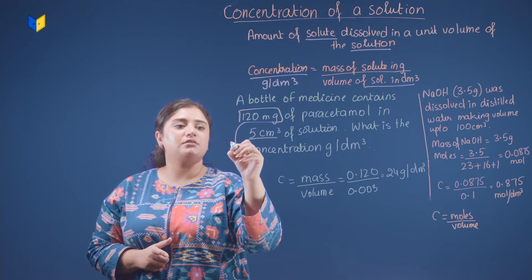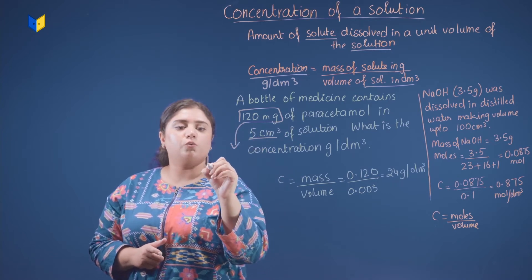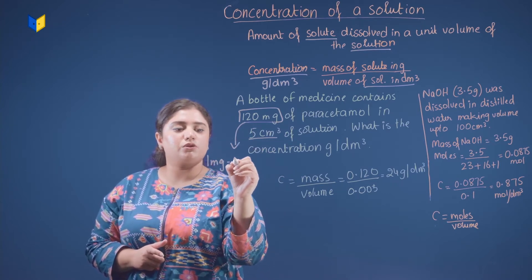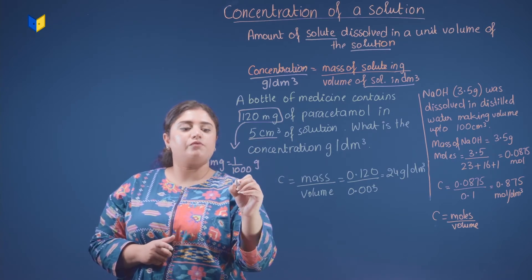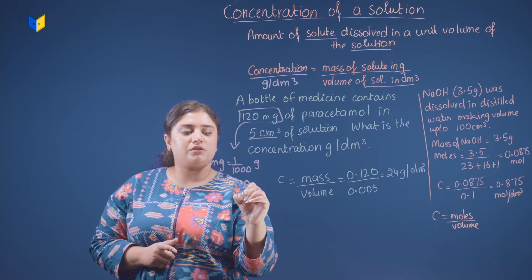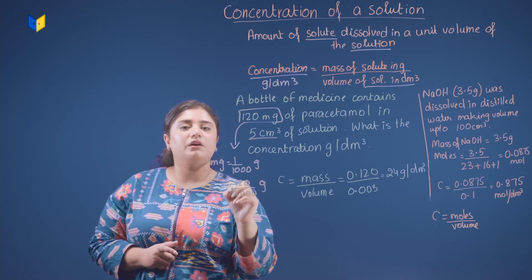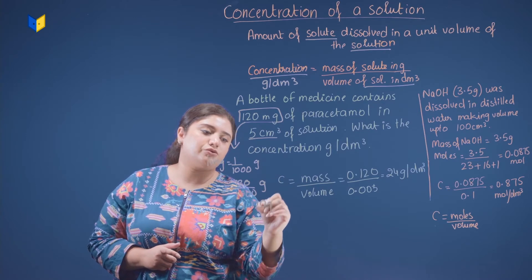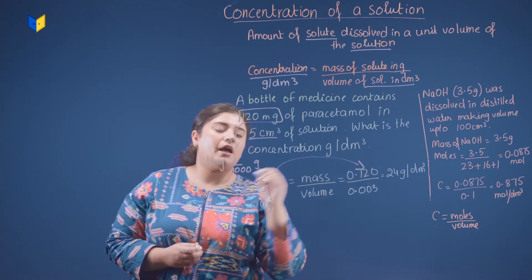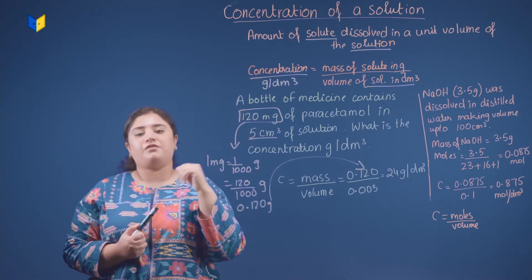Now first of all, this is the very important thing that we need to see. This is given in milligrams. So one mg is equals to one over thousand grams. So what will you do? You're going to divide 120 by 1000 to convert it into grams. That will give us 0.120 grams, which I have written here.